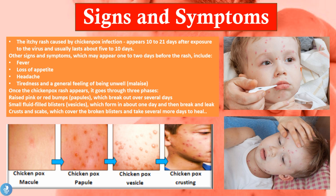From the papule stage we move to small fluid-filled blisters called vesicles, which form in about one day and then break open and leak. This is what the chicken pox vesicles look like. Then we have the crusting and scab stage, which covers the broken blisters and takes several more days to heal.